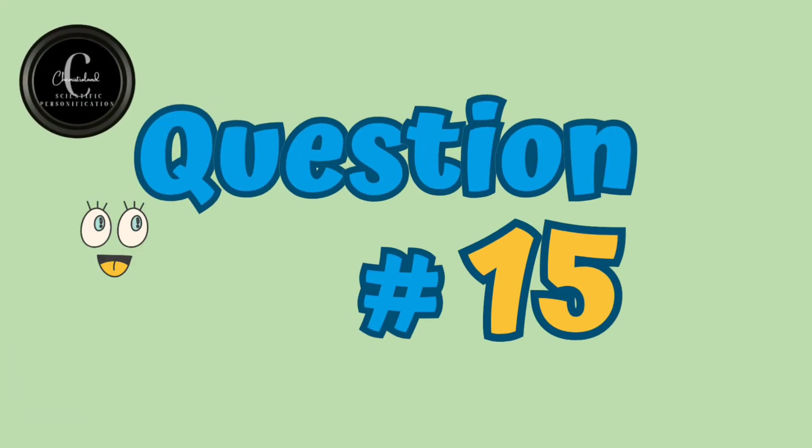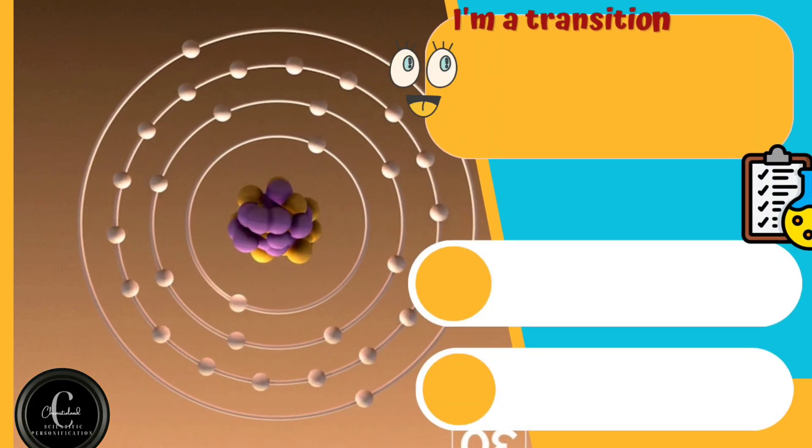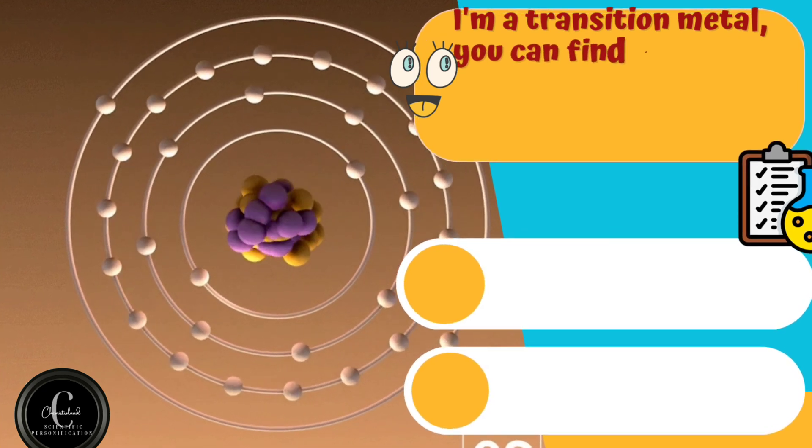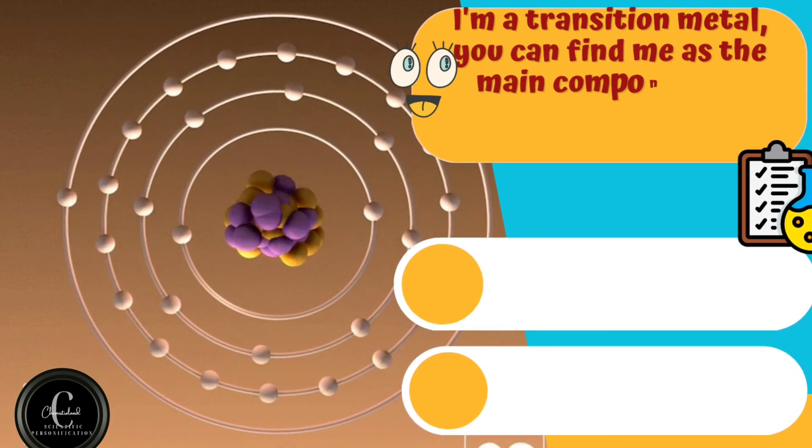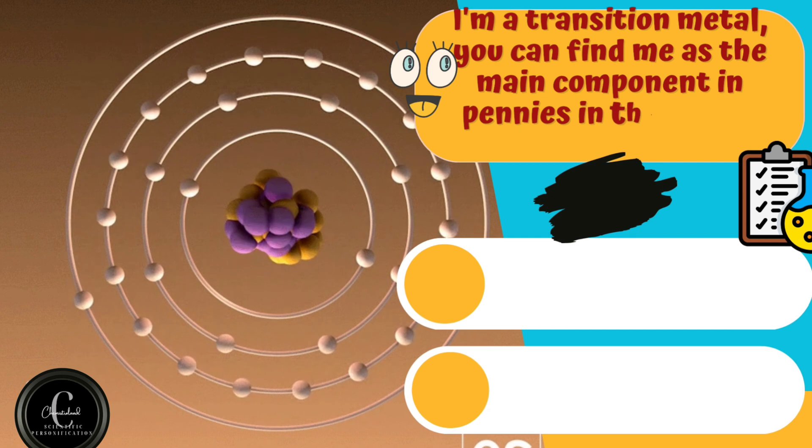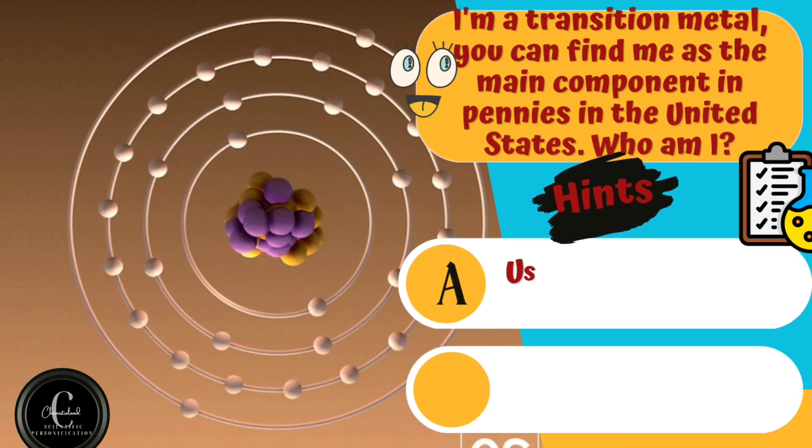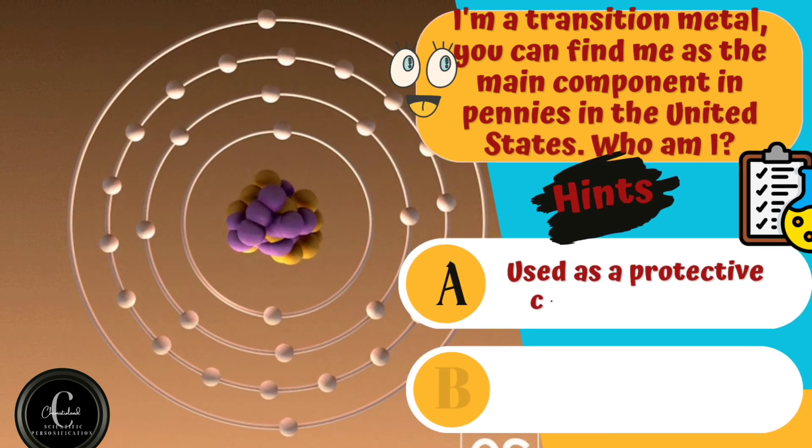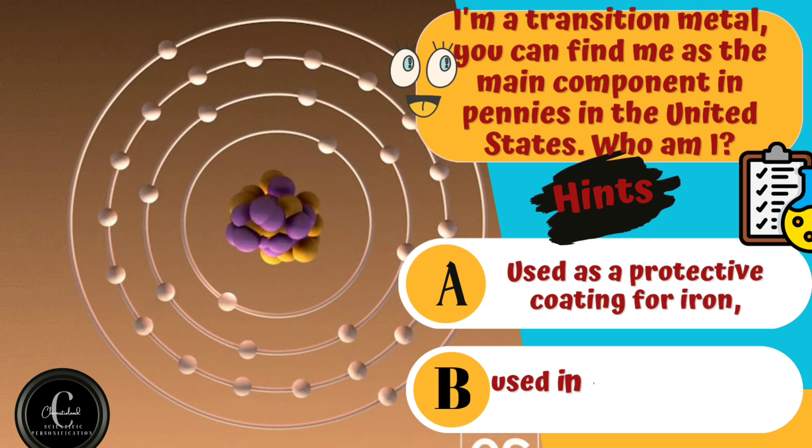And the last question is I'm a transition metal. You can find me as main component in pennies in the United States. Who am I? Hints are A. Used as a protective coating for iron. B. Used in the production of batteries.